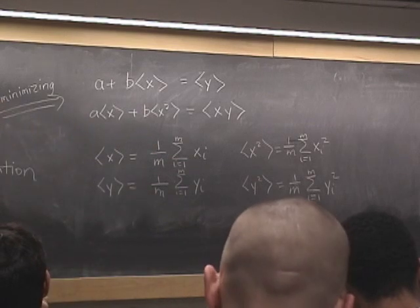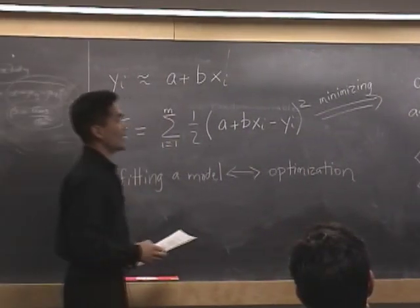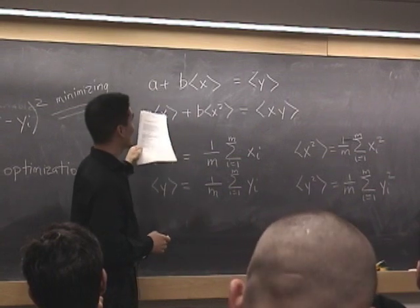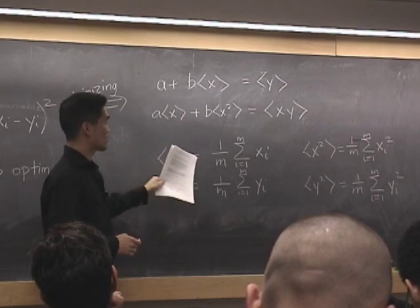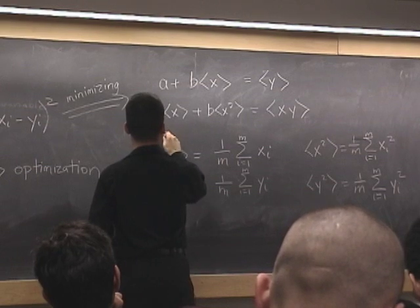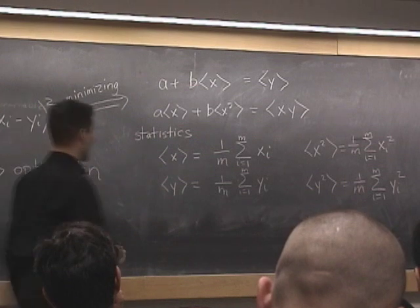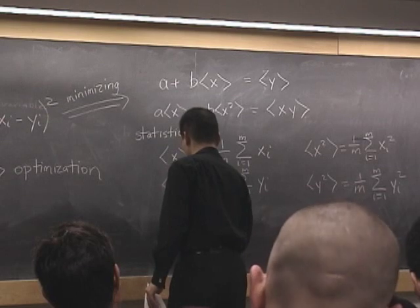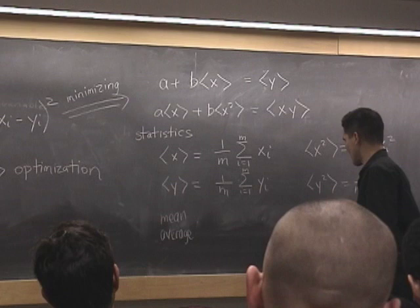Okay, so something interesting has appeared here, which is that we were solving this modeling problem, how to fit some data, and what ends up inside these equations—these are simultaneous equations for a and b. We need to solve these equations for a and b to find this minimum. But the coefficients of a and b in these equations are statistics, right? So these are very standard statistical quantities. And this is called the mean or average. And this is called the second moment.